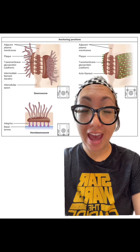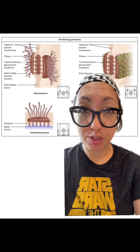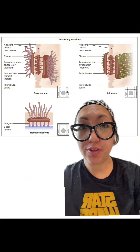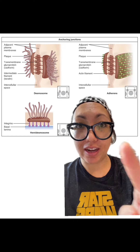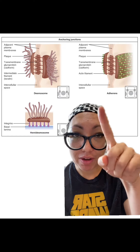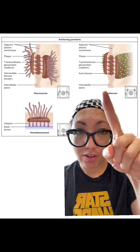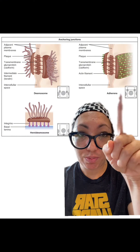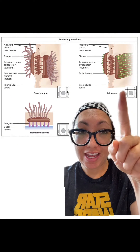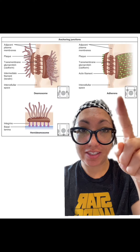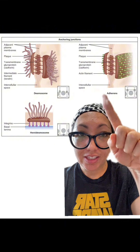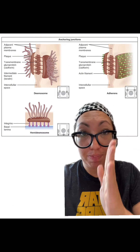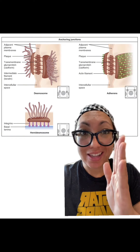Now let's take a quick look at desmosomes. To do this, we need to look at a couple specific parts of the cell. So if you'll look here, this part and this part right here on the inside of the cell — these plaques are going to be on the inside wall.